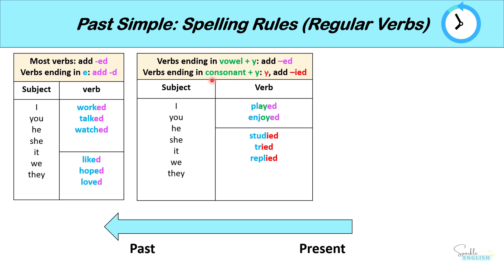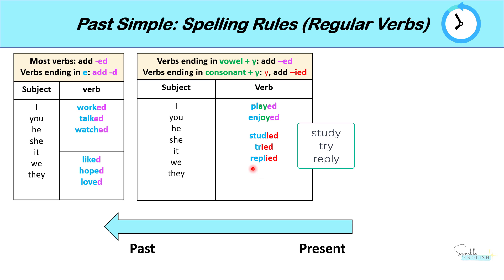Now verbs that end in a consonant plus Y, we cross out the Y and add IED. So study becomes studied, because it ends in DY — a consonant plus a Y. Try becomes tried. Reply becomes replied.